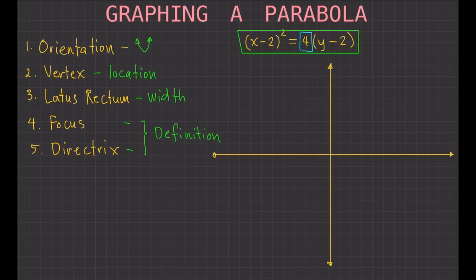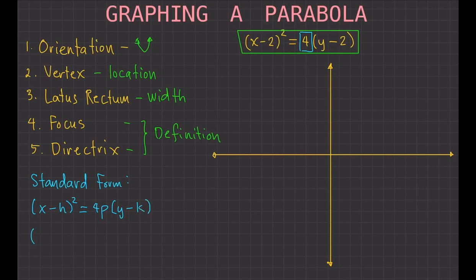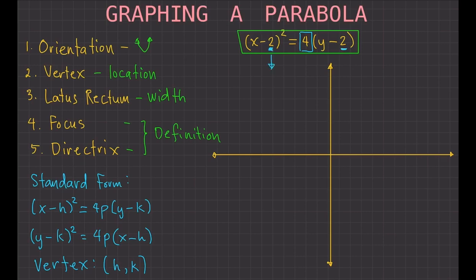Next, we want to locate the position of the parabola using its vertex. Recall that the standard form of a parabola is either (x minus h) squared equals 4p(y minus k), or (y minus k) squared equals 4p(x minus h). In both cases, the vertex is (h, k). So in this example, the vertex is (2, 2), because h equals 2 and k equals 2.